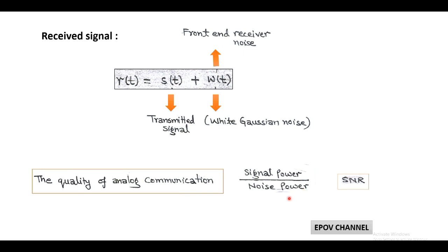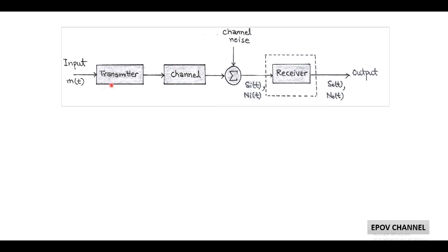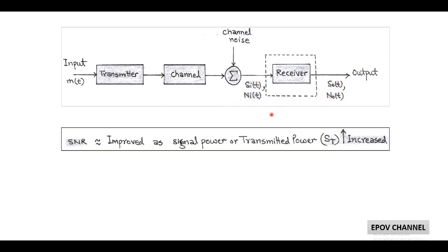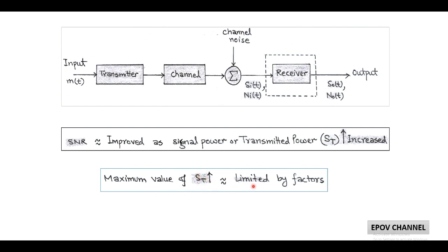To understand this briefly, we consider a typical analog communication system which consists of an input message source M(t), a transmitter, a channel, and channel noise which is additive in nature. After this the received signal is collected by a receiver, where we find SNR at the input side and SNR at the output side. The signal to noise ratio plays an important role in determining noise performance, and it should be improved by increasing the signal power or transmitted power. But the maximum increase in transmitted power is limited by factors such as increased cost, maximum signal power requiring increased channel capacity, and interference problems.